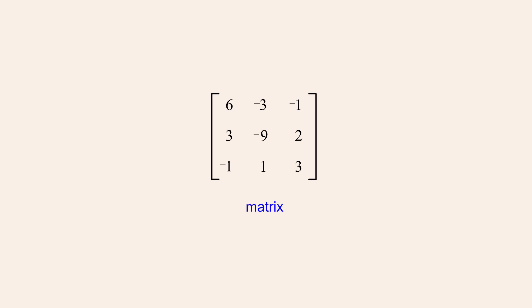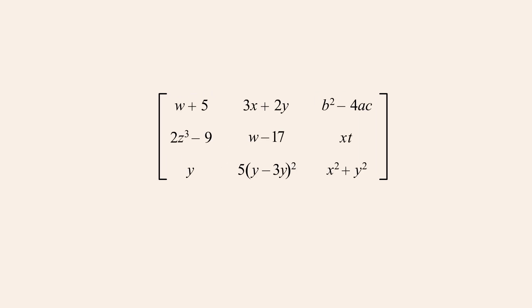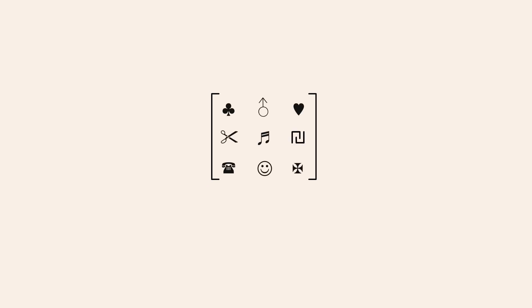A matrix is a type of mathematical object, just as numbers, variables, and expressions are types of mathematical objects. A matrix is a rectangular array containing individual elements or entries enclosed in brackets. The entries of a matrix can be numbers, symbols, expressions, or any type of mathematical object for which the operations of addition and multiplication have been defined. This requirement is necessary since some matrix operations involve addition or multiplication of individual entries.